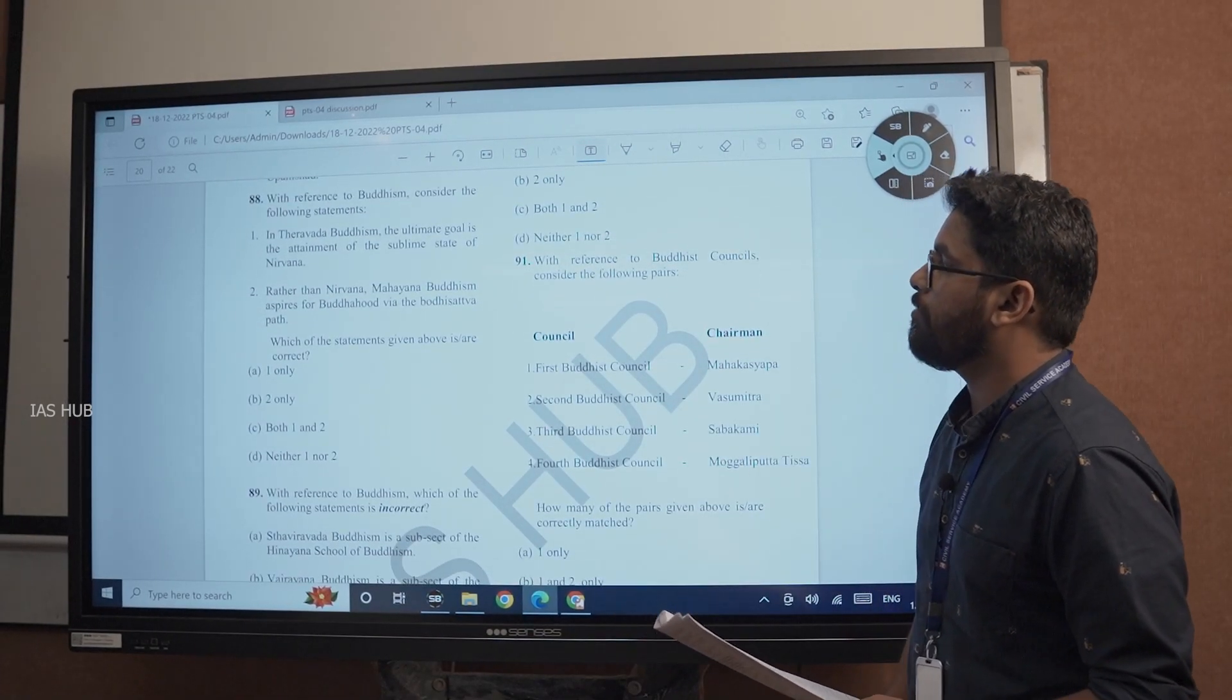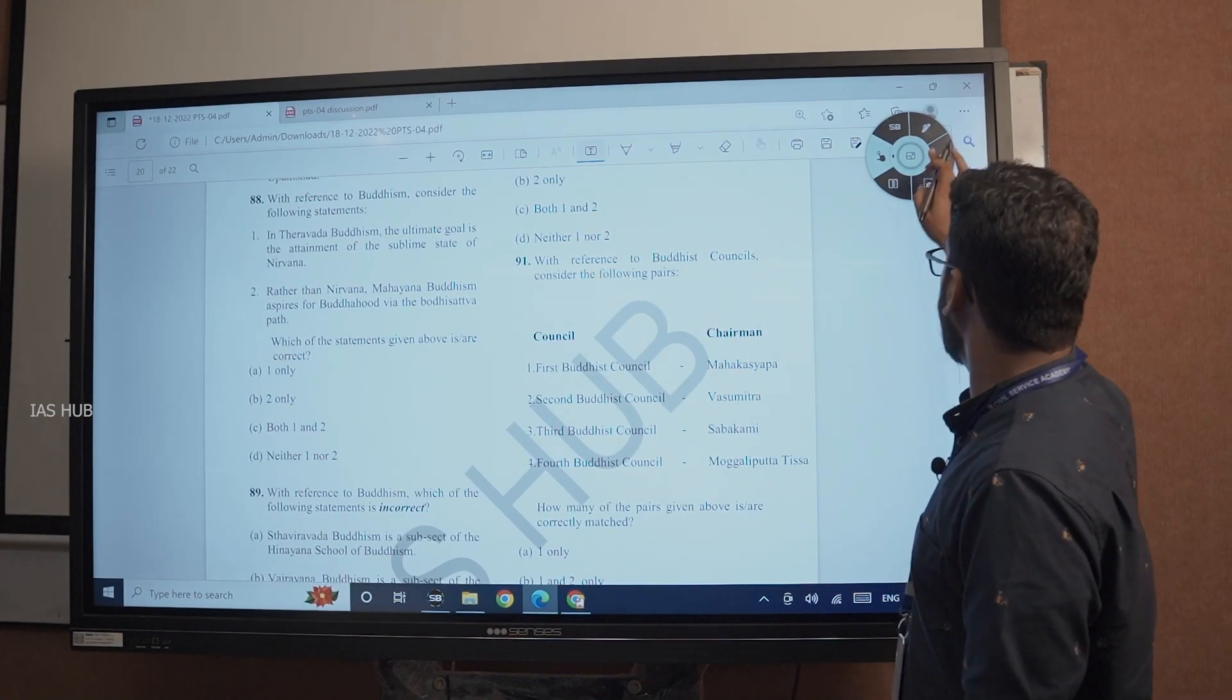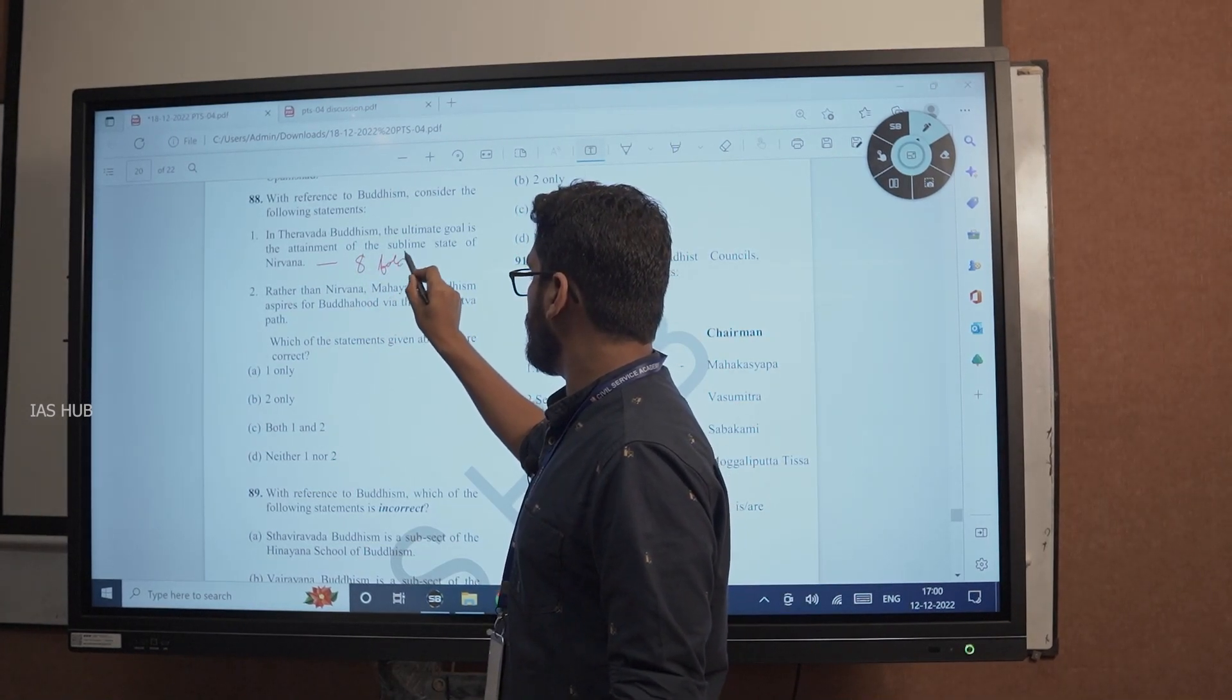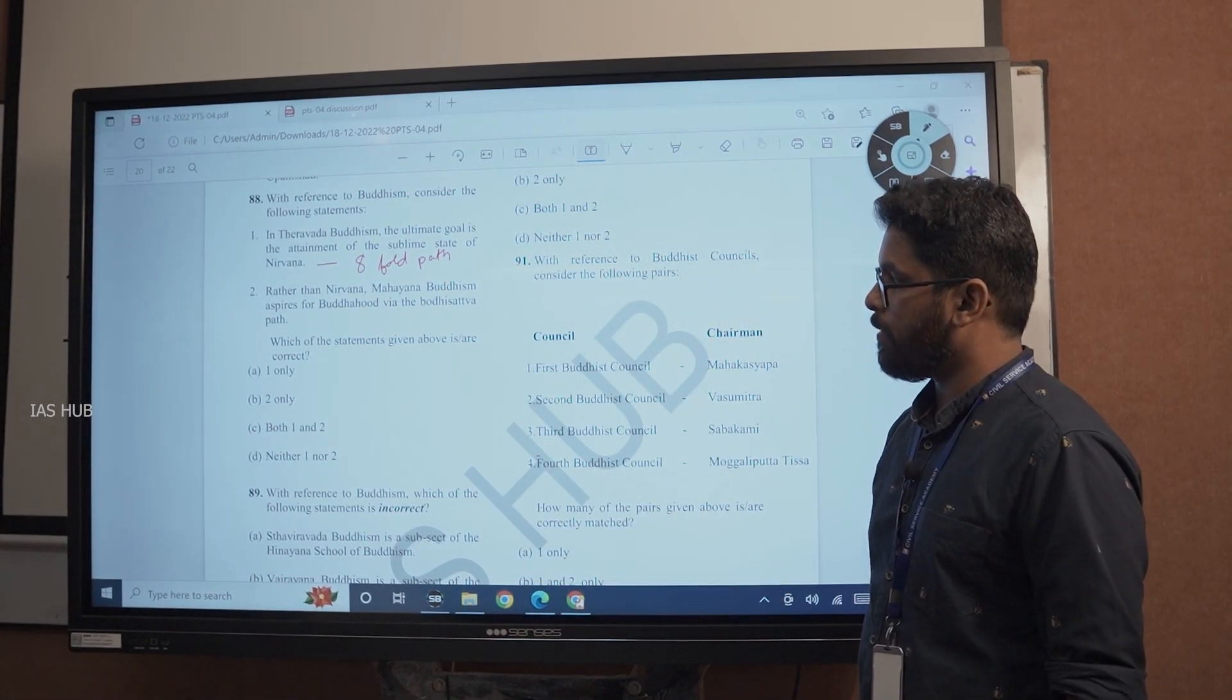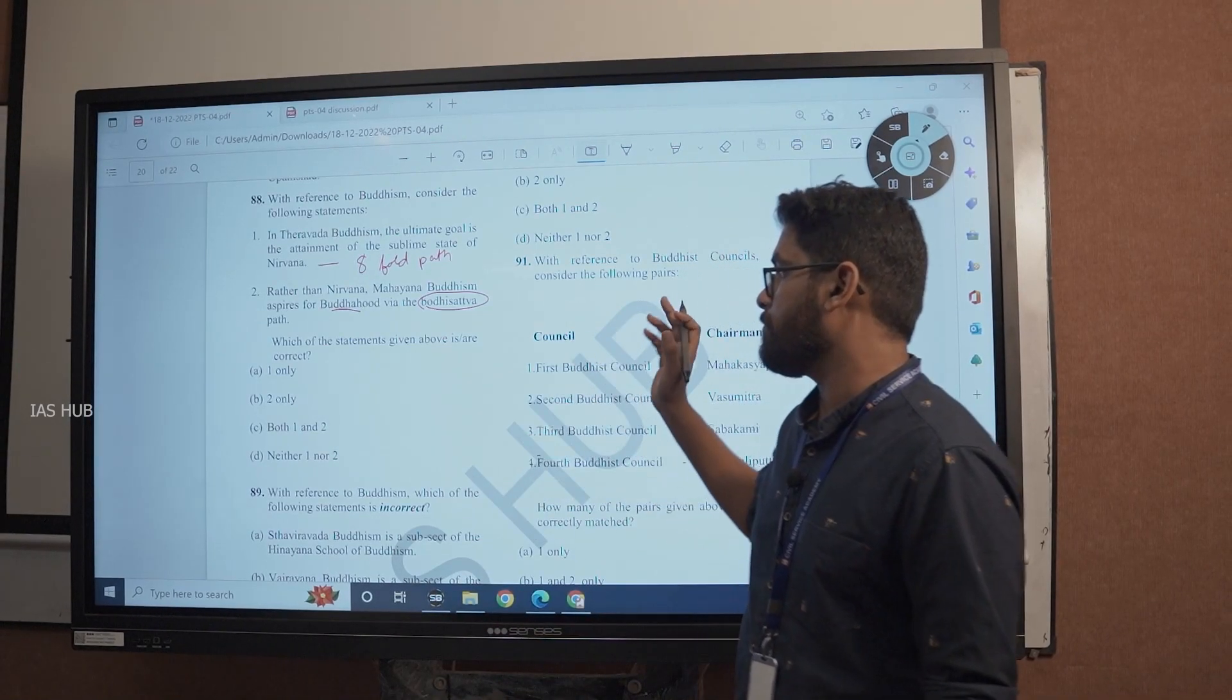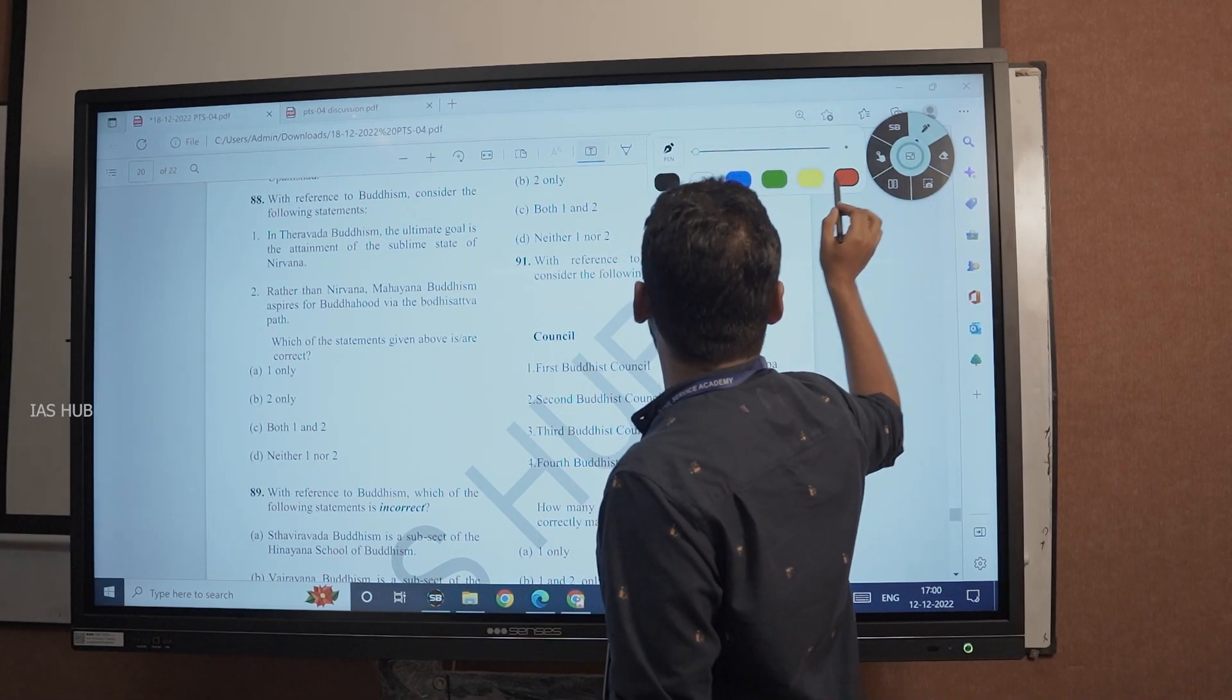Question number 88, with reference to Buddhism, consider the following statements. In Theravada Buddhism, the ultimate goal is the attainment of sublime state of Nirvana, that is correct, through eightfold paths. Rather than Nirvana, Mahayana Buddhism aspires for Buddhahood via the Bodhisattva. Bodhisattva is nothing but helping other Buddhas to attain salvation, attain Nirvana. So both statements are correct.